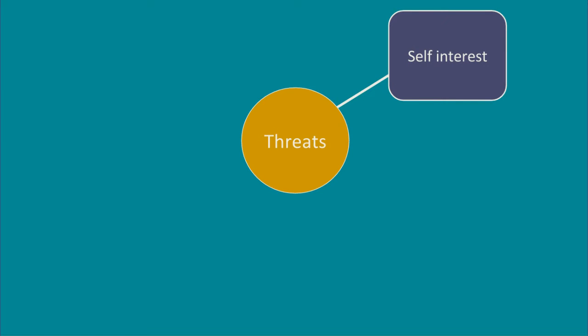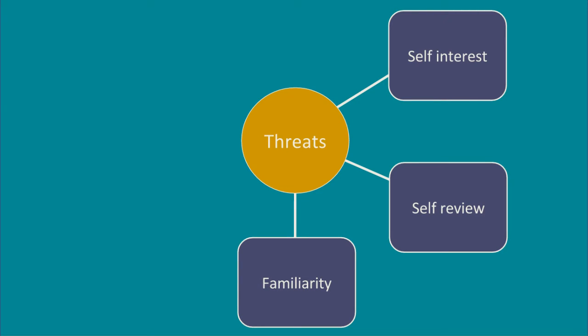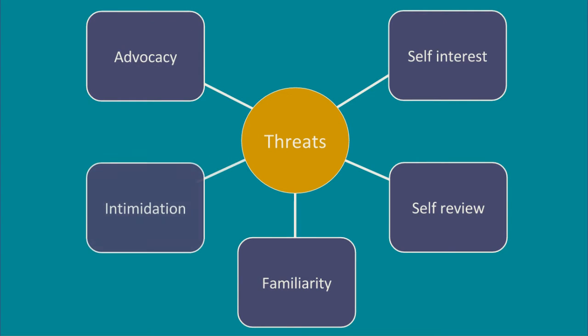Self-interest, self-review, familiarity, advocacy and intimidation. Firstly, we need to understand what each type of threat is, then I will take you through some practical examples and how the auditor should manage them.